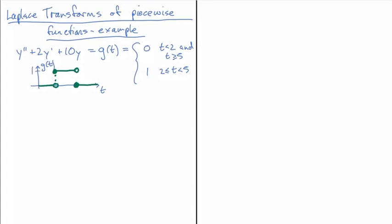That's the function we're forcing the ODE with. Let's use zero initial conditions — y of 0 equals 0 and y prime of 0 equals 0. This will make things simpler, though not different in principle — it would just take longer and be uglier otherwise.